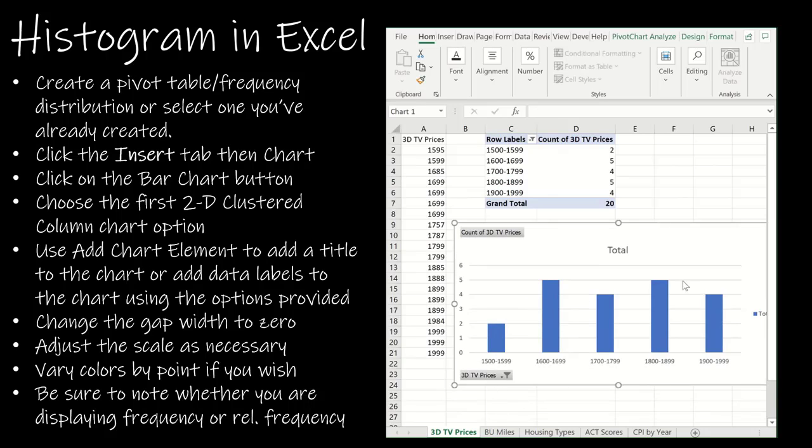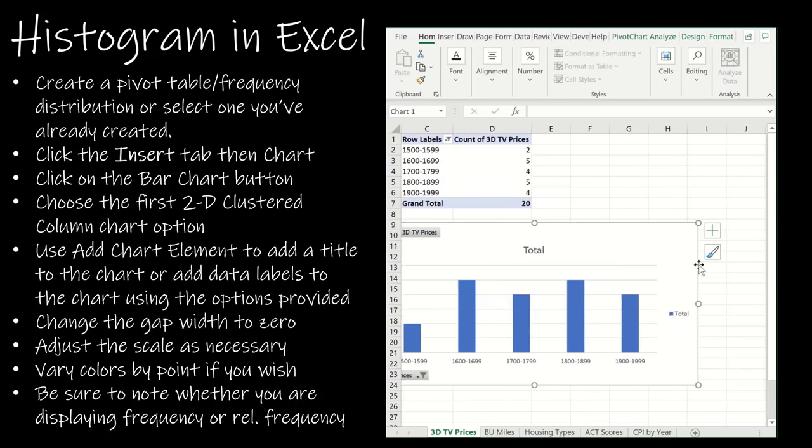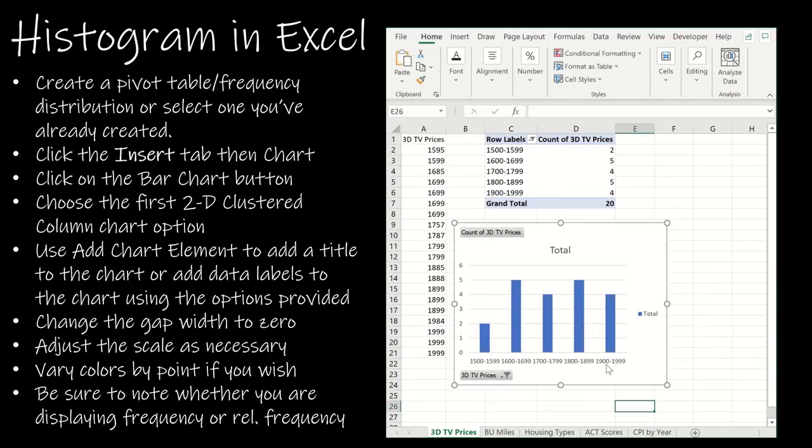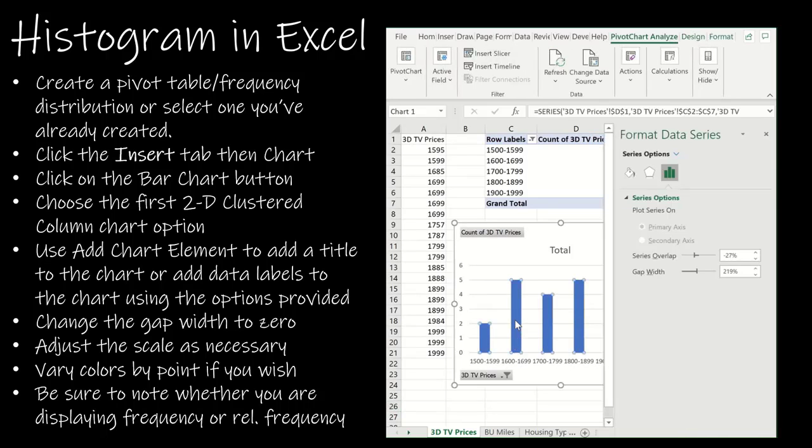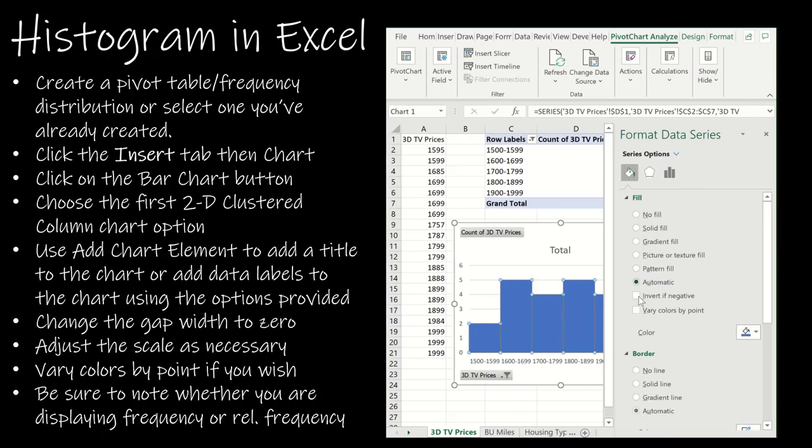I'm going to scroll over here a little bit and make this a little bit smaller. So what I have is all of the bars, but if you'll notice, the bars aren't touching. So if I double click on the bar, I can go to gap width and take it to zero. I can go and vary colors by point. So it's just a little bit prettier.